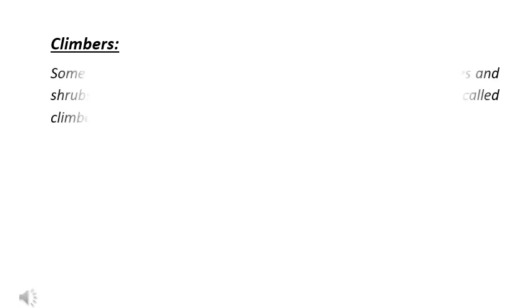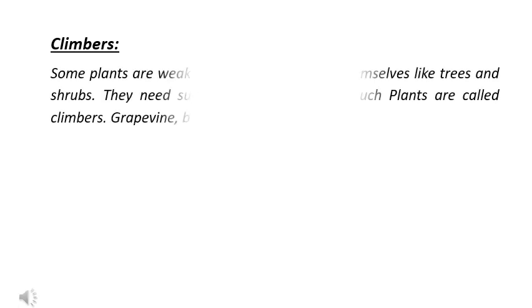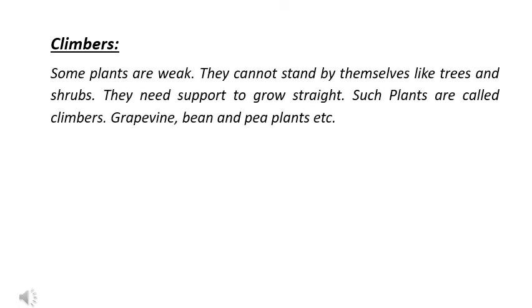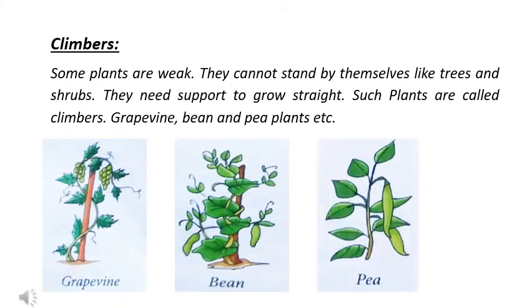Now, we will discuss about climbers. Some plants are weak. They cannot stand by themselves like trees and shrubs. They need support to grow straight. Such plants are called climbers. For example, grapevine, bean, etc.